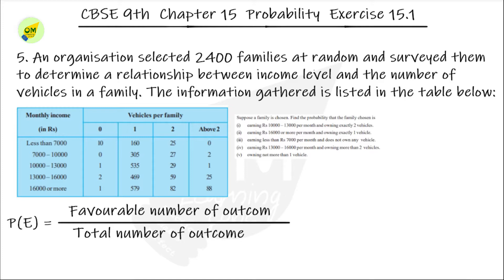Suppose a family is chosen. Find the probability that the chosen family is: first, earning 10,000 to 13,000 per month and owning two vehicles.